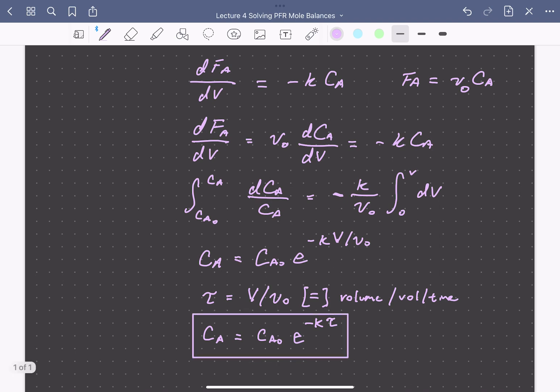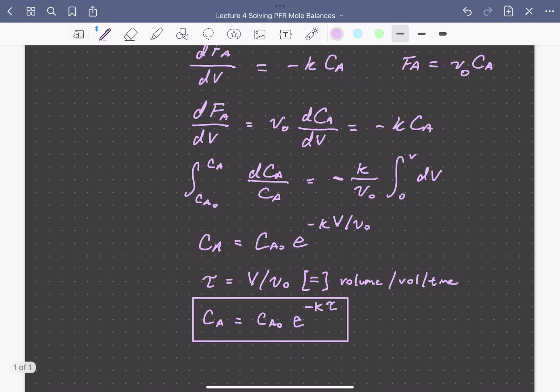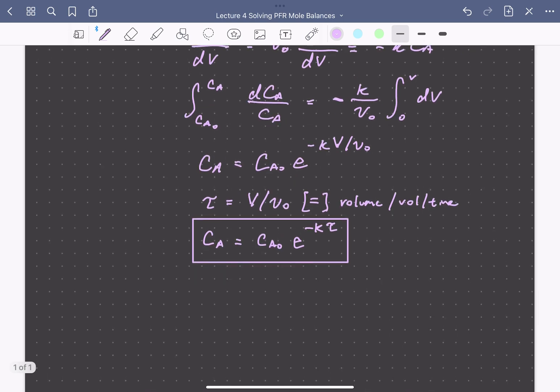You might recognize this concentration profile as identical to that of the batch stirred tank reactor, with tau now taking the place of the reaction time T. In general, the plug flow reactor equations are mathematically identical to those of the batch stirred tank reactor, with tau replacing the reaction time T.